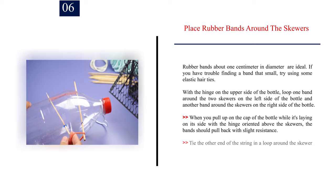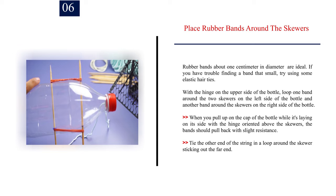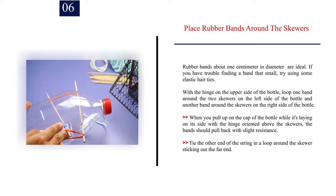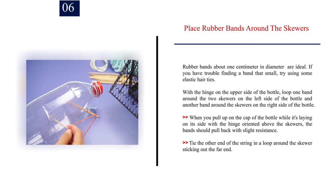Number 6: Place rubber bands around the skewers. Rubber bands about one centimeter in diameter are ideal. If you have trouble finding a band that small, try using some elastic hair ties. With the hinge on the upper side of the bottle, loop one band around the two skewers on the left side of the bottle and another band around the skewers on the right side of the bottle. When you pull up on the cap of the bottle while it's laying on its side with the hinge oriented above the skewers, the bands should pull back with slight resistance. Tie the other end of the string in a loop around the skewer sticking out the far end.